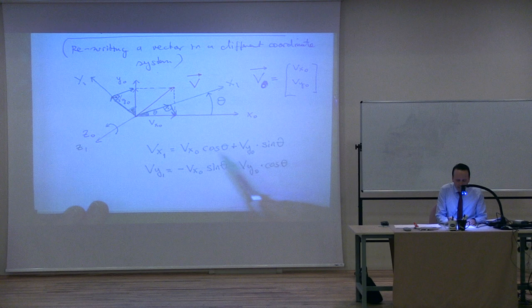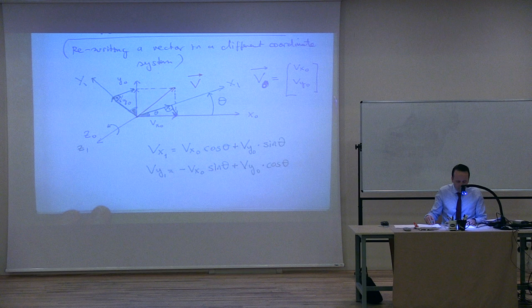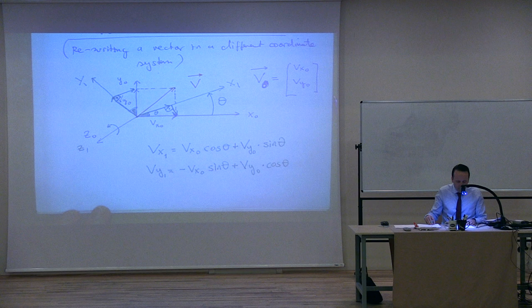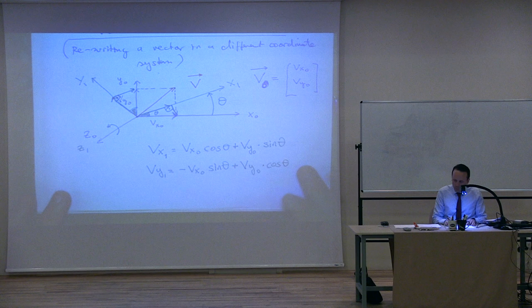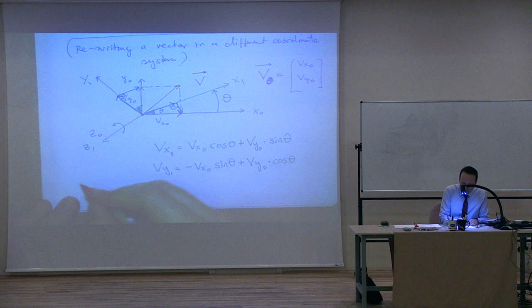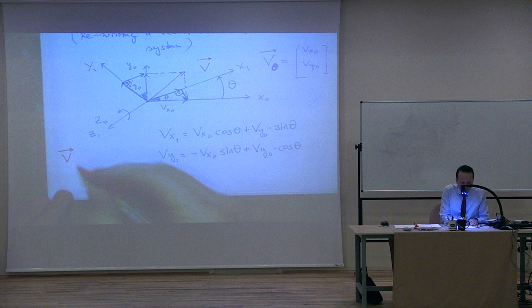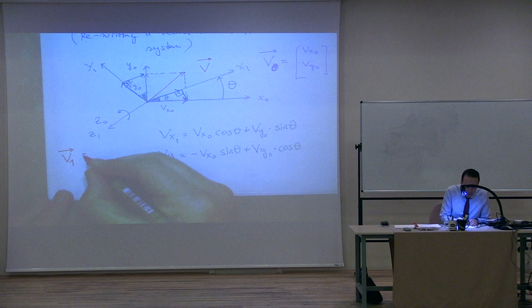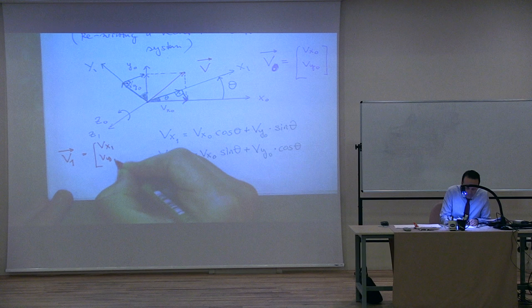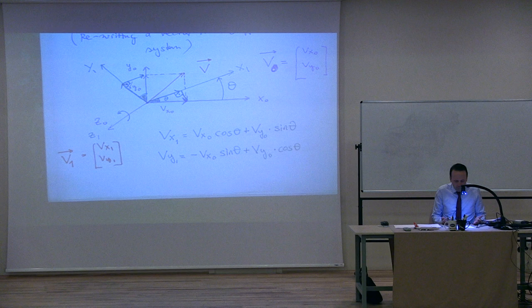We call this the transformation matrix — or sometimes the directional cosine matrix. It is transforming the components of a vector written in one coordinate system into another. This is a rotation around the z-axis by angle θ; it is a two-dimensional rotation in a three-dimensional coordinate system. Of course, you can also rotate around the x-axis or y-axis and get a similar transformation matrix for each. All you need to do is the same argument I just did for z — write the components of V, and rewrite them in the new system using trigonometry.